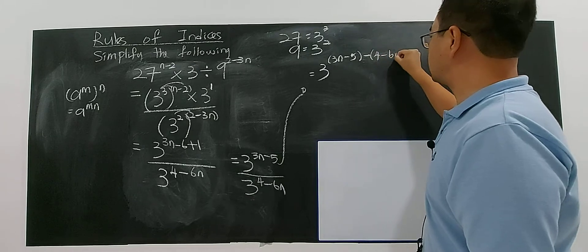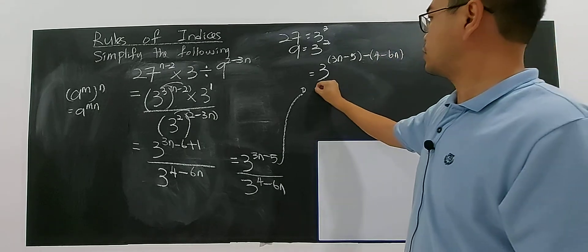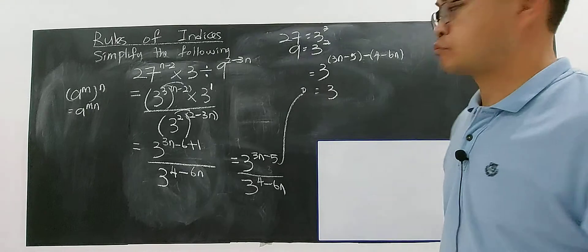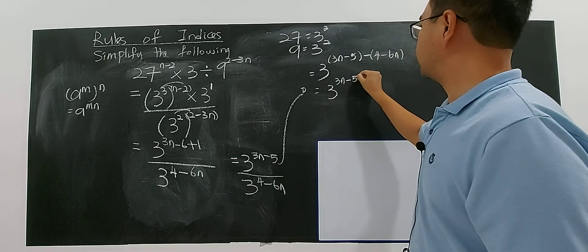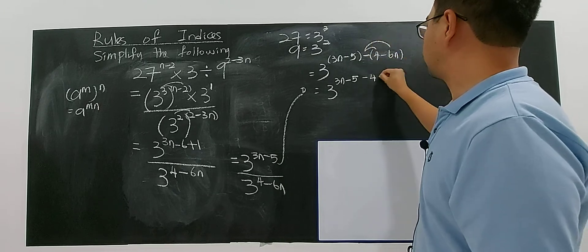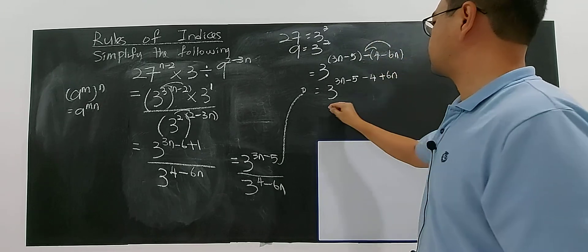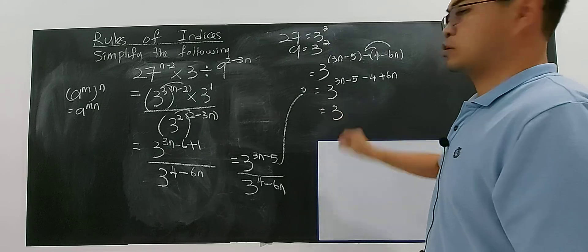Then you will have 3 to the power of 3n minus 5 minus 4 plus 6n. So you'll have 3 to the power of...